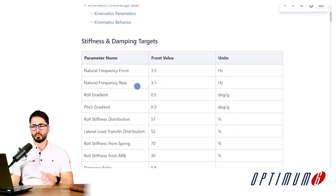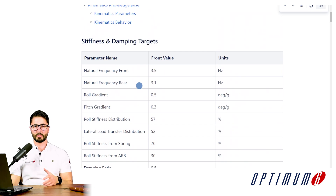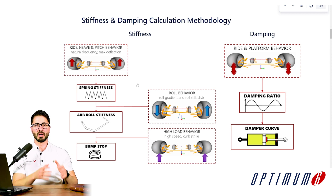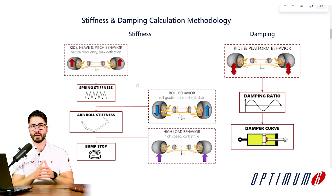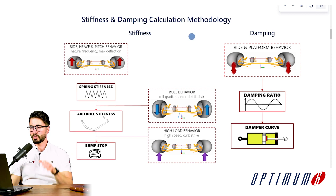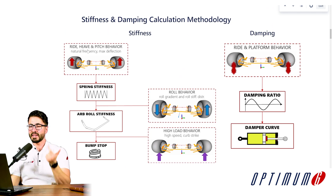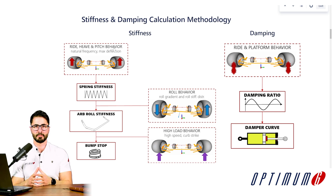If you are interested in knowing many details on how to determine these numbers, you could be interested in our seminars. But before we analyze all of these numbers, let's have a look at the overall architecture — the overall methodology that we should follow when designing these components. This schematic will give us a very good idea. First, we need to define what ride, heave, and pitch behavior we expect from our car.